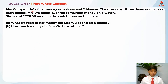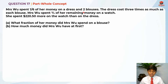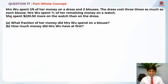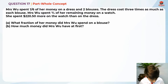Question 17 is testing us on the part-whole concept. Let's read Part A first: Mrs Wu spent one sixth of her money on one dress and two blouses. The dress costs three times as much as each blouse. Mrs Wu spent three quarters of her remaining money on a watch. She spent $220.50 more on the watch than on the dress. Part A asks: what fraction of her money did Mrs Wu spend on one blouse?